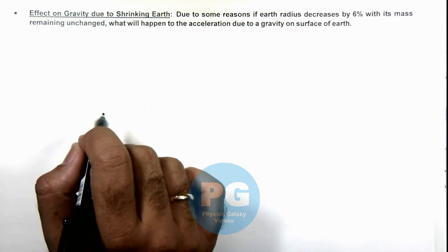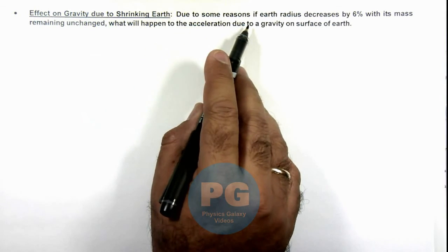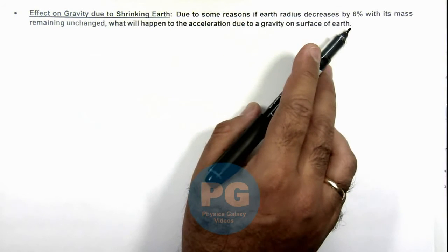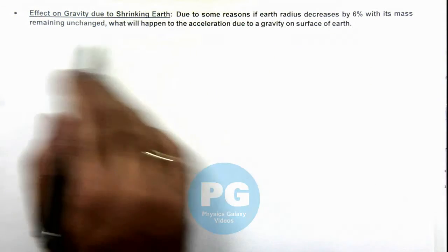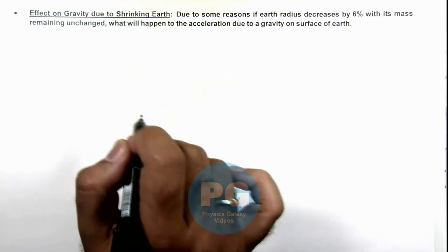Here we can see the situation where it is given that due to some reasons, if Earth's radius decreases by 6%, with its mass remaining unchanged, what will happen to the acceleration due to gravity on the surface of Earth?